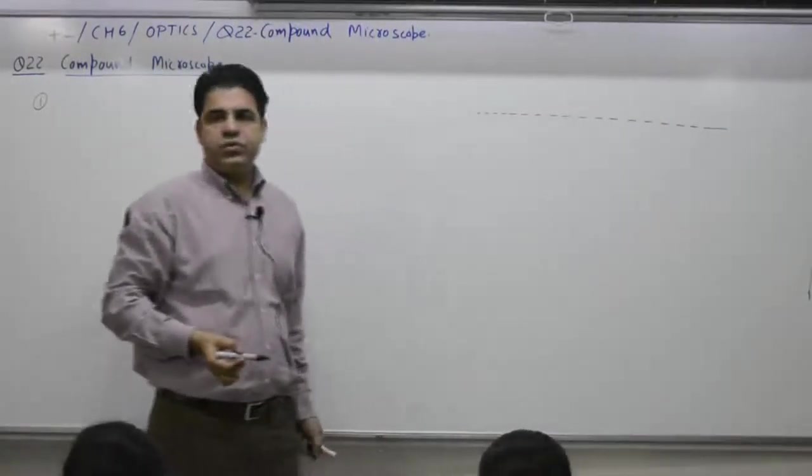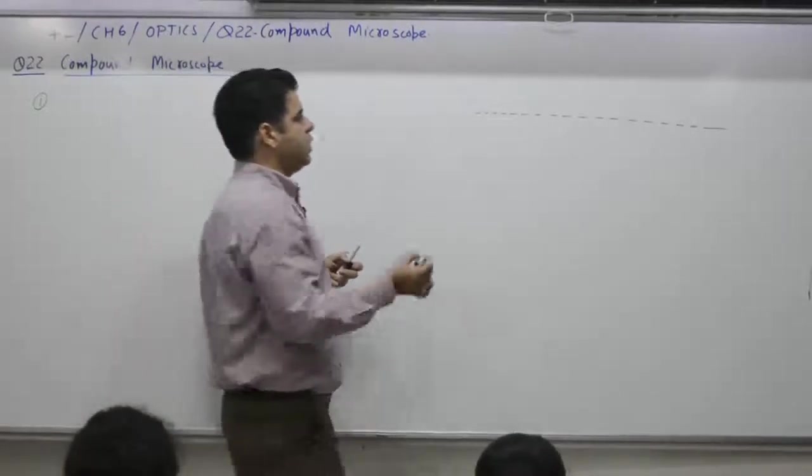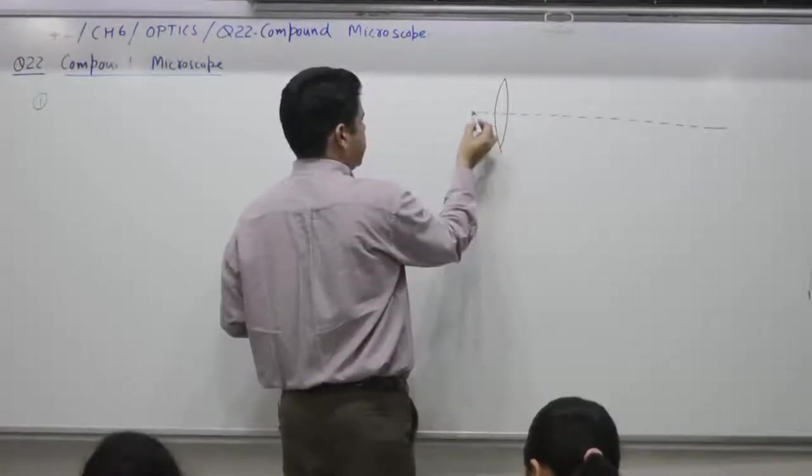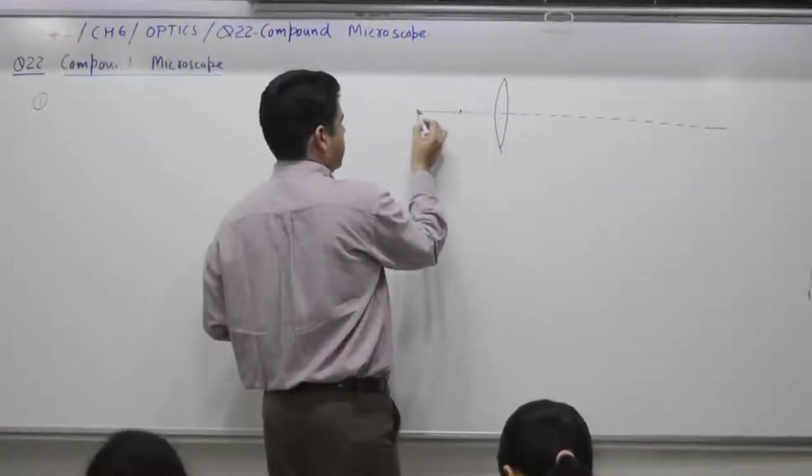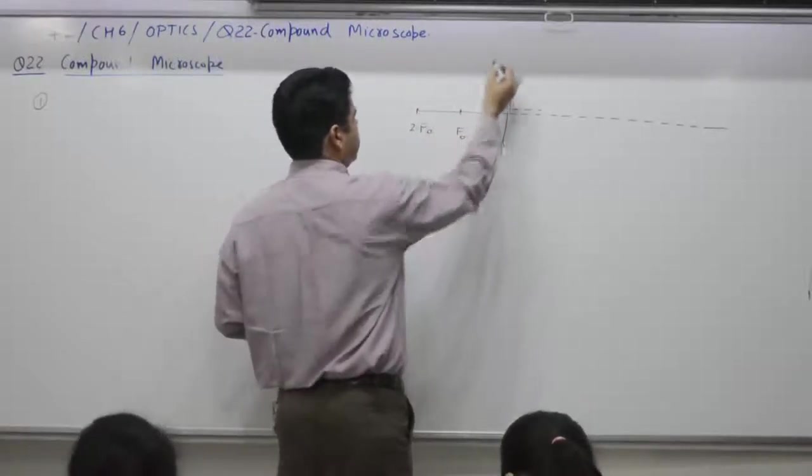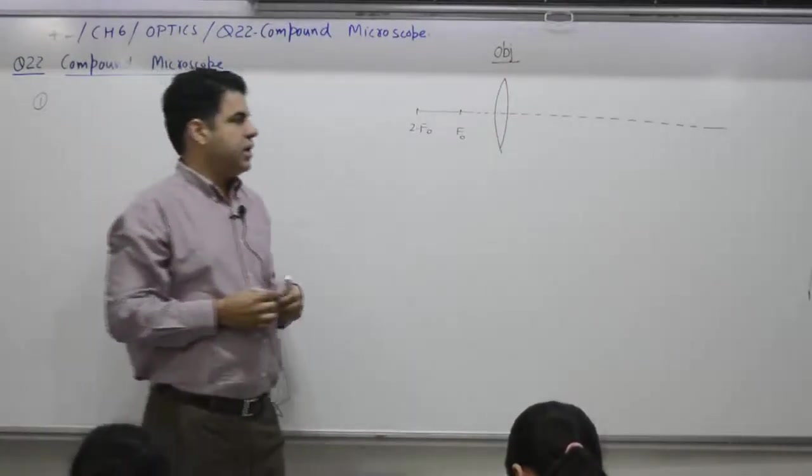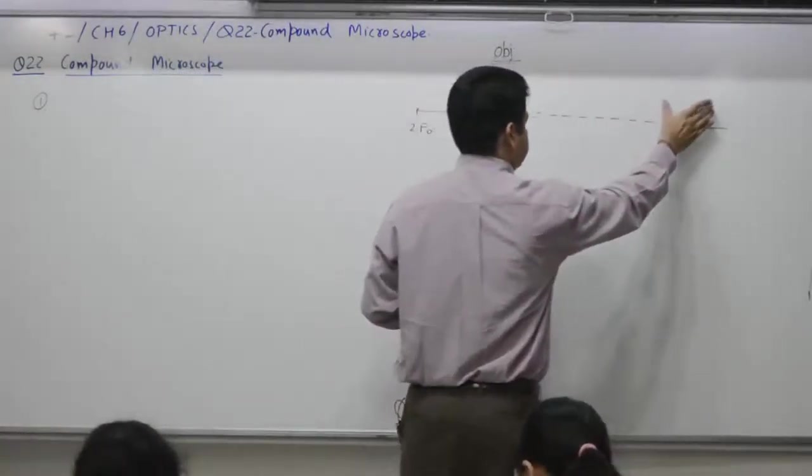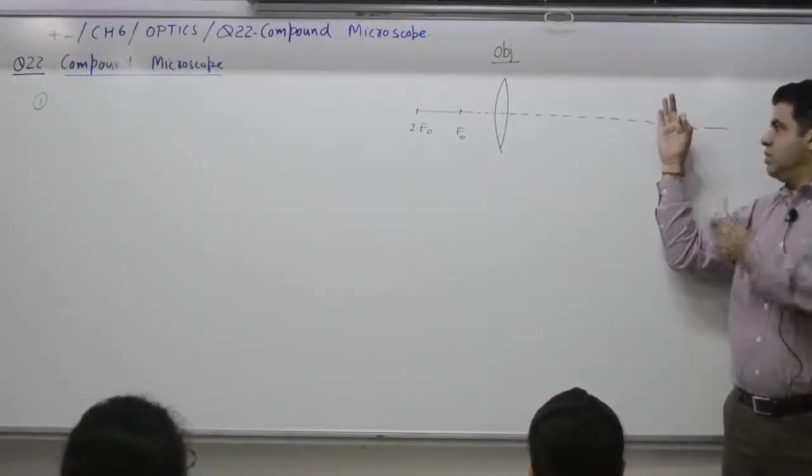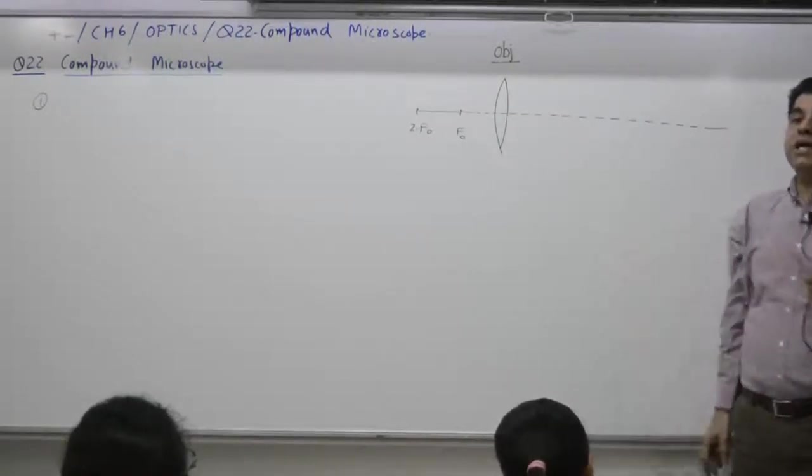Question number one, how many lenses are used? Compound microscope means you are using two lenses. Lens number one which is placed near the object is termed as objective. And the one which is the second one will be used to magnify this image form and is close to the eye is termed as the eyepiece.